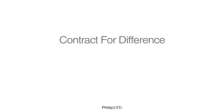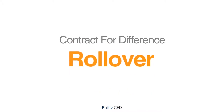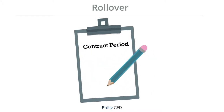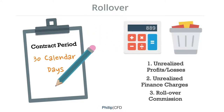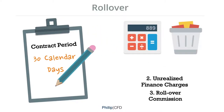Philips CFD practices a 30 calendar day auto-rollover. All contracts will be auto-rolled over on the 30th calendar day. This process will realise all your profits, losses, and finance charges.